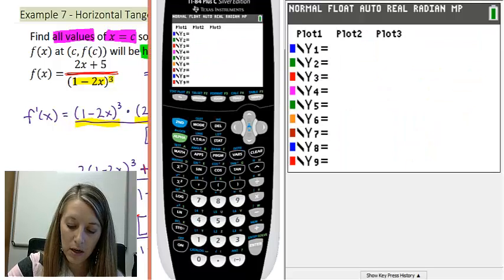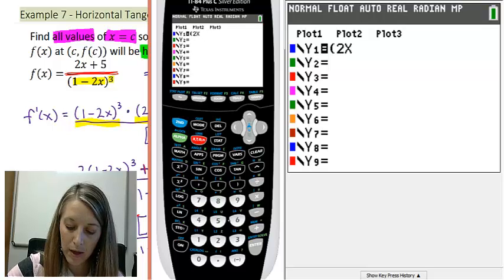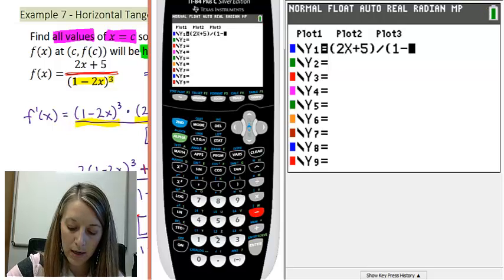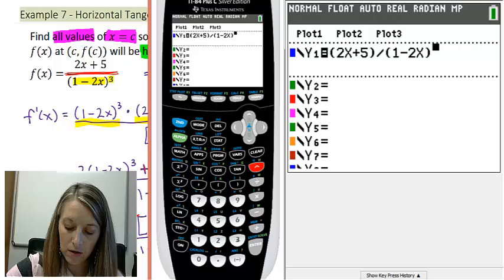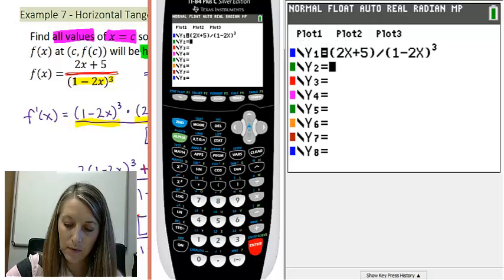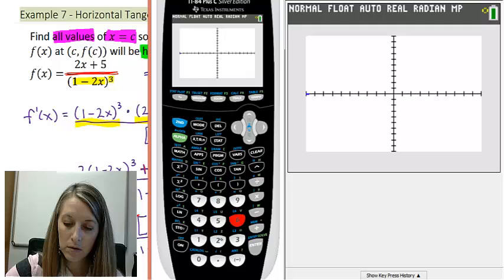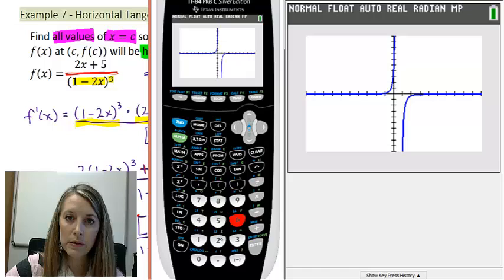So pulling up my calculator here. Plugging in my original equation (2x + 5) divided by (1 - 2x) to the third. Graphing it on the standard window. And we actually don't see any max or min, which is where our tangent line is horizontal. But we came up with an answer, so let's see what's actually happening there.